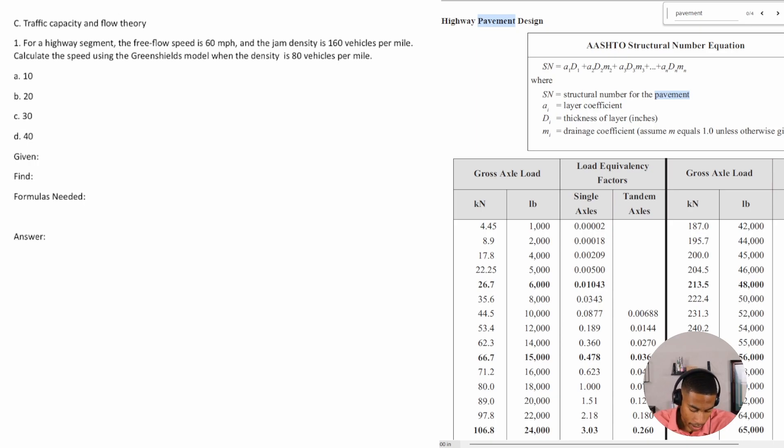It says for a highway segment, the free flow speed is 60 miles per hour and the jam density is 160 vehicles per mile. Calculate the speed using the Green Shields model when the density is 80 vehicles per mile.